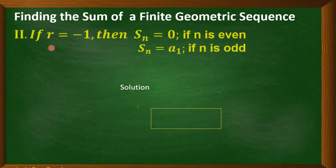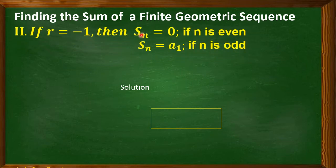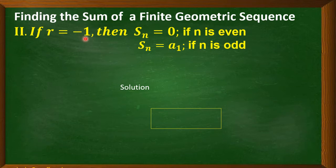Next, if r is equal to negative 1, we apply these concepts: S sub n is automatically 0 if n, the number of terms, is an even number. And S sub n is equal to the first term if n is an odd number.